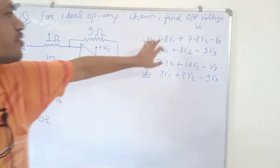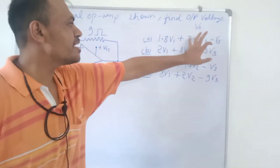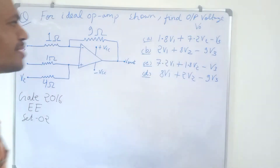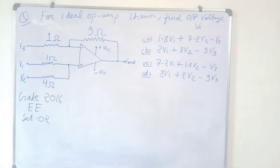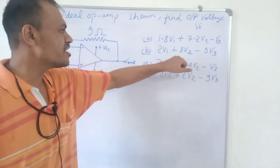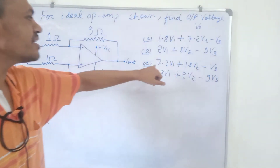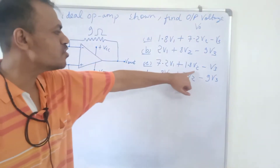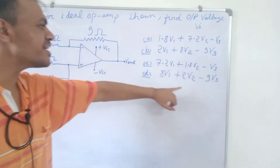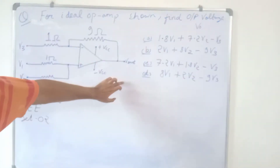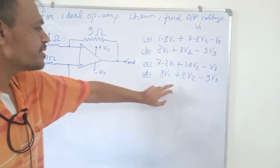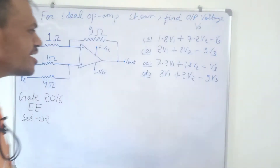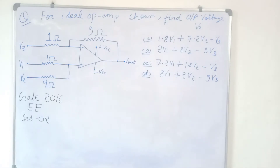There are four options given. Option A: 1.8V1 + 7.2V2 − V3. Option B: 2V1 + 8V2 − 9V3. Option C: 7.2V1 + 1.8V2 − V3. Option D: 8V1 + 2V2 − 9V3.